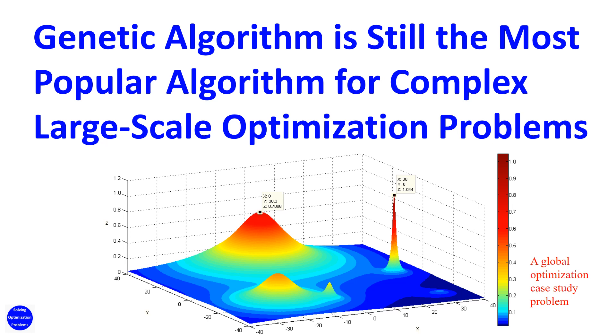Hello, everyone. Genetic algorithm is still the most popular algorithm for complex large-scale optimization problems. Did you know that?